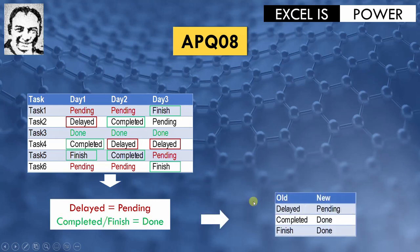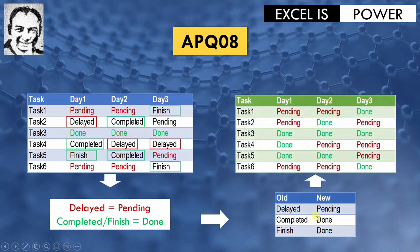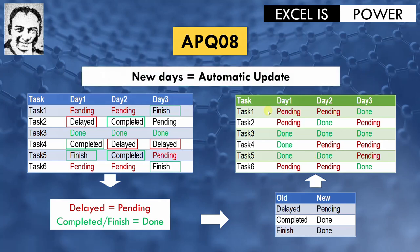That's why I prepared a small table containing the old word and the new word. I need to replace 'delayed' by 'pending' and 'completed' or 'finished' by 'done'. I'm going to use Power Query to bulk replace all the values at once. Not only this — once I add new days, the replacement will be done once I refresh the query.